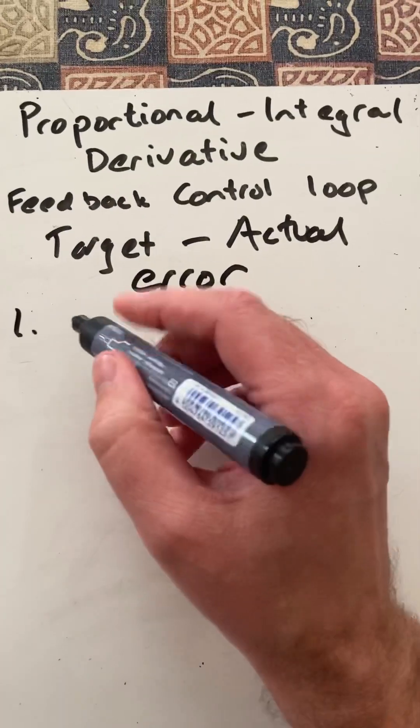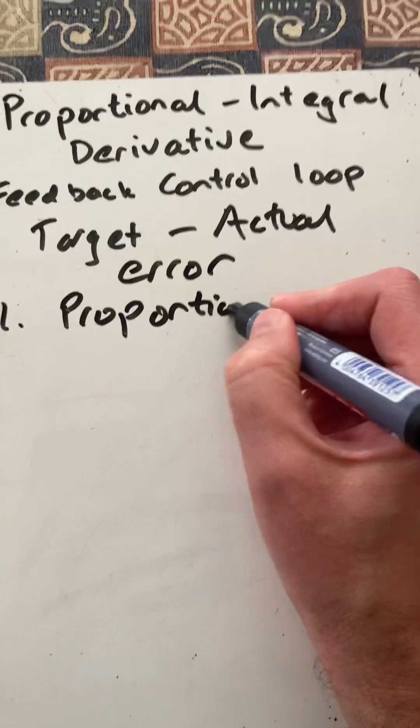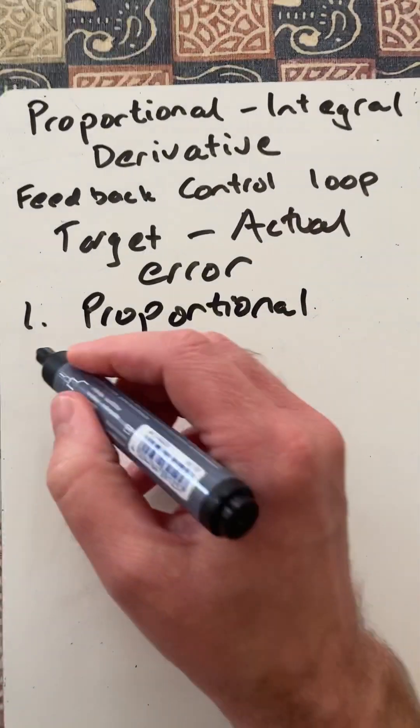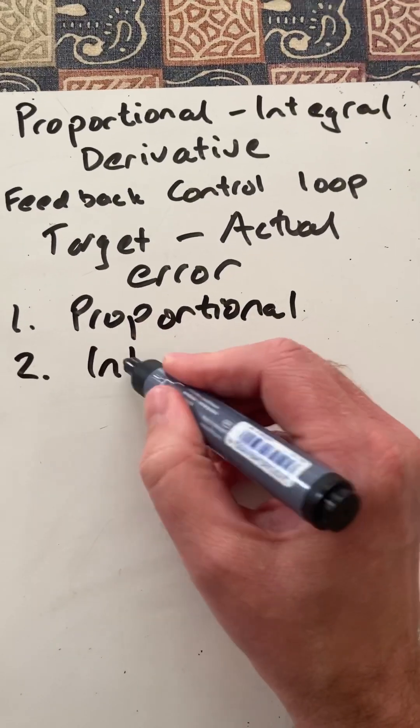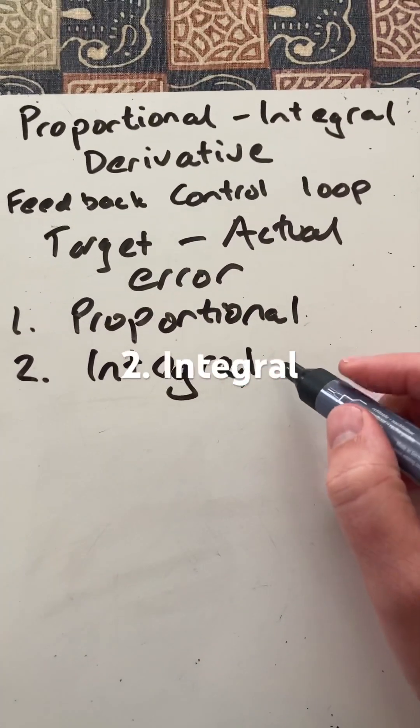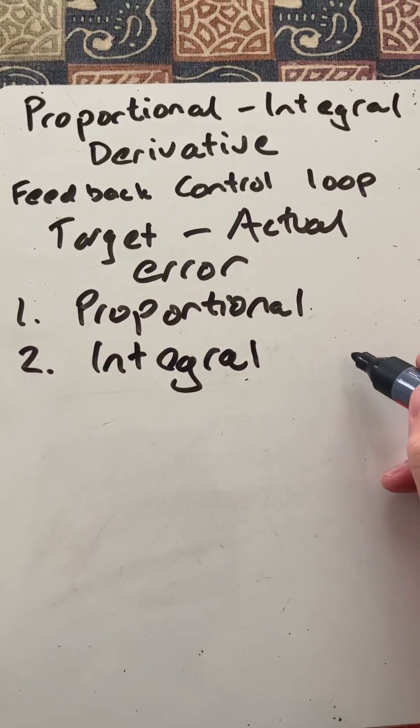Now, the system would respond to that in three ways. The first way would be the proportional response to that error. The second way would be the integral response, which will be a cumulative sum of all past errors.